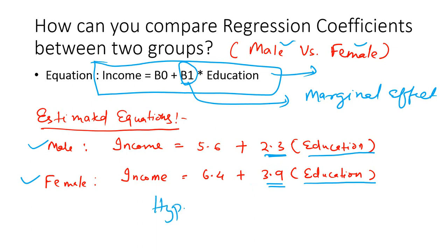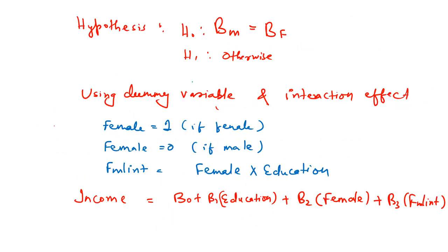That's not correct because these are statistical estimates — we cannot simply give a judgment just by looking at the numbers. We have to do hypothesis testing. The null hypothesis is that the slope coefficient for the male population and the slope coefficient for the female population are the same. The alternative hypothesis is that they are different. If the null hypothesis gets rejected, we can confirm there is a difference in marginal impact.